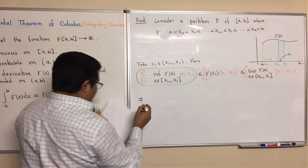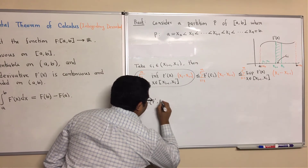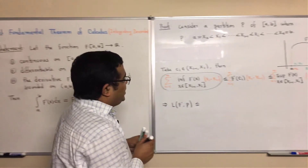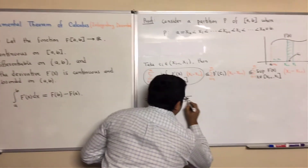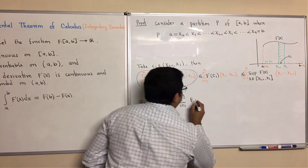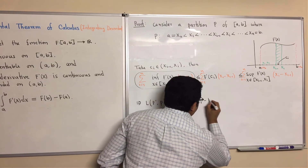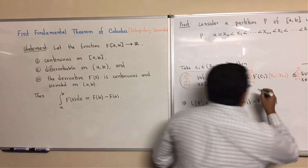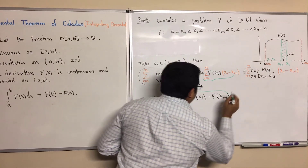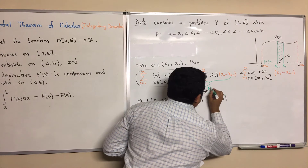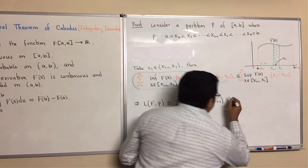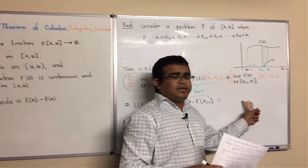If we apply the Mean Value Theorem to the middle term, it becomes the summation from i equals 1 to n of F of xi minus F of x(i-1). So we apply the Mean Value Theorem here. And by the definition of the upper Riemann sum, the right side is U(F prime, P).